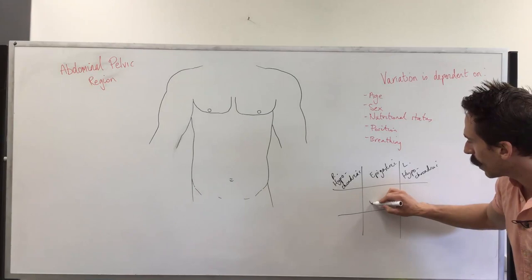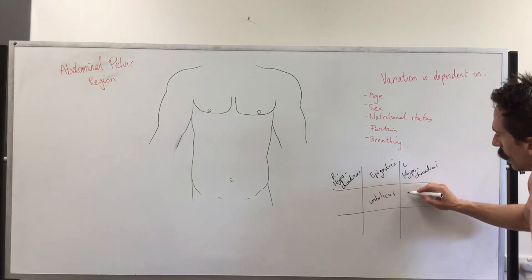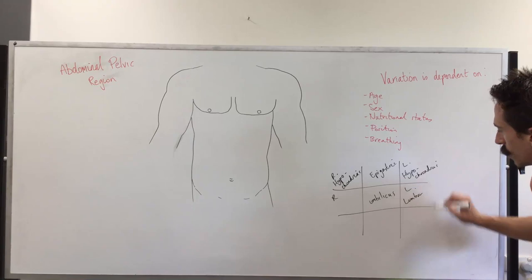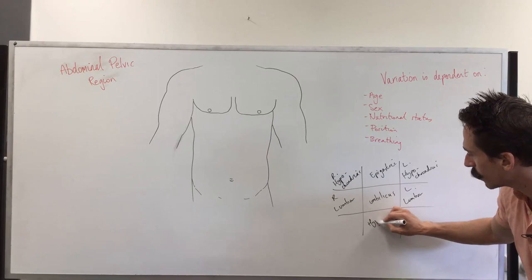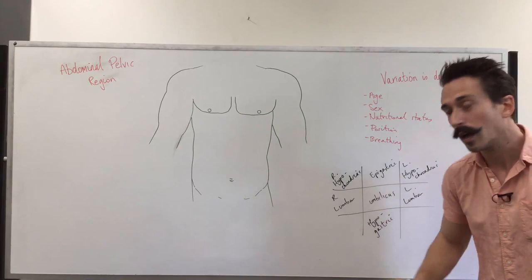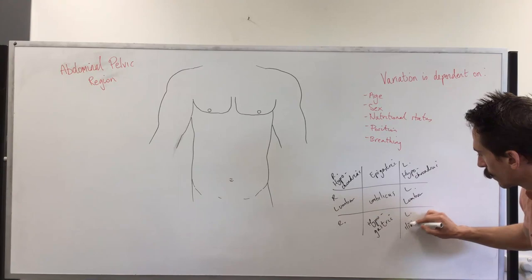Then in the middle, we've got the umbilical or umbilicus. Flanked either side is the left and right lumbar because of where it's located in regards to the spine. Down here, we've got hypogastric, so below stomach. And that's flanked either side by the left and right iliac.